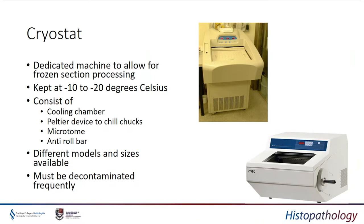The key piece of equipment for a frozen section is a cryostat — a dedicated machine which allows frozen section processing. It must be kept at minus 10 to minus 20 degrees Celsius. It consists of a cooling chamber which allows the tissue to cool, a Peltier device which can be used to chill the chucks on which tissue is processed, a microtome for tissue sectioning, and an anti-roll bar and tissue sectioning area which allows you to extract the tissue section onto a glass slide for staining and examination. There are many different types and models available, with numerous videos on YouTube and commercial websites.